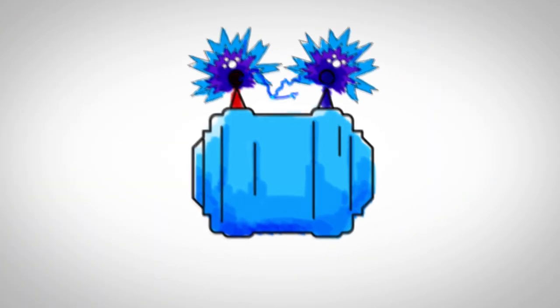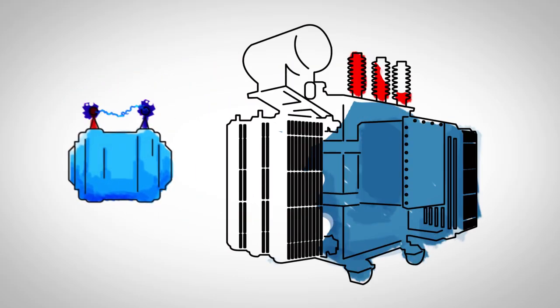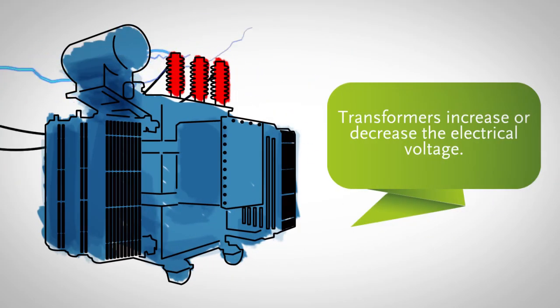No matter how it is generated, electricity is transmitted through cables from the generators to the transformers, which increase or decrease the electrical voltage.